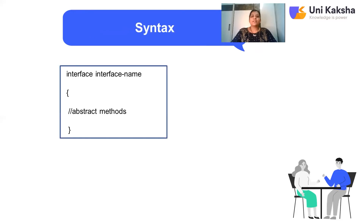This is the syntax for writing interfaces. You declare an interface using the interface keyword, followed by the interface name — which follows the same naming rules as variables or classes. Inside the interface, you include only abstract methods and static constants. This is the syntax of interfaces.